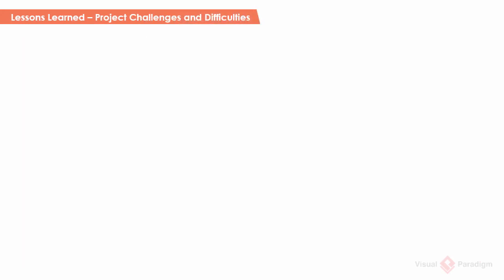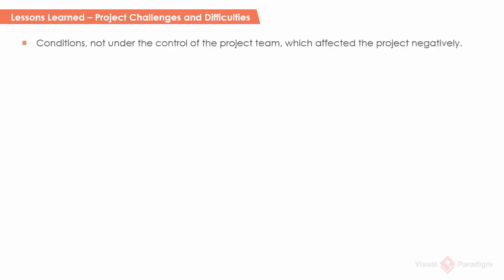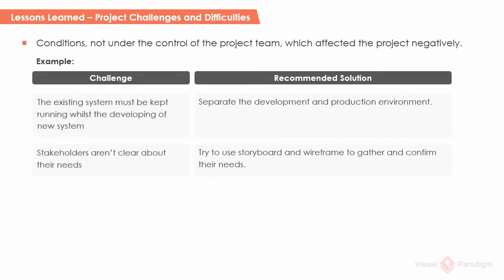Project challenges and difficulties refer to conditions not under the control of the project team which affect the project negatively. You have to describe the challenges faced and the solution recommended. For example: it was required that the existing system must be kept running whilst developing the new system — a situation the team faced and had to tackle. A recommended solution is that the development and production environment should be separated. A recommended solution can be one that was implemented and found effective, or a better alternative to the implemented option.